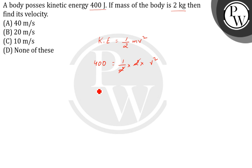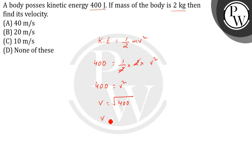2 gets cancelled. So v squared equals 400, or v equals root over 400. So v is equal to 20 meter per second.